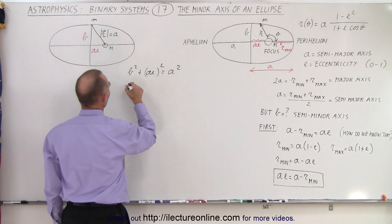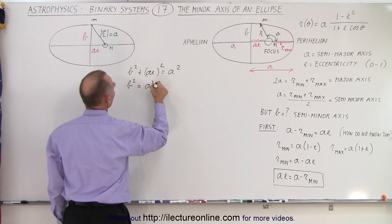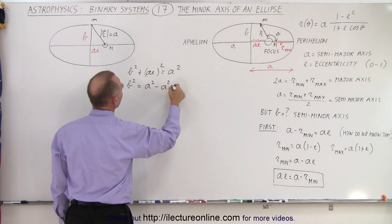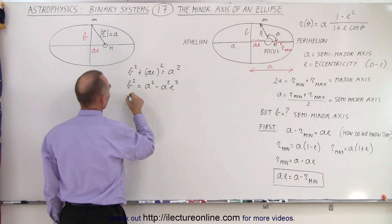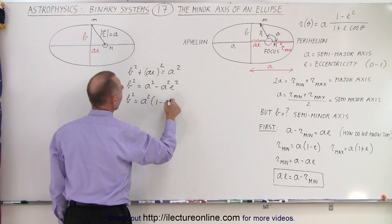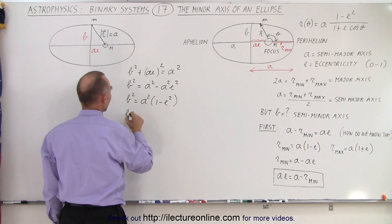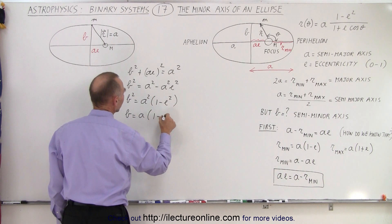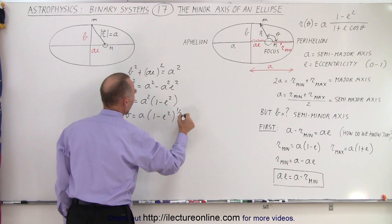So in this case, we have B² = A² - A²e², and so we can say that B² = A²(1 - e²), or finally B = A√(1 - e²).